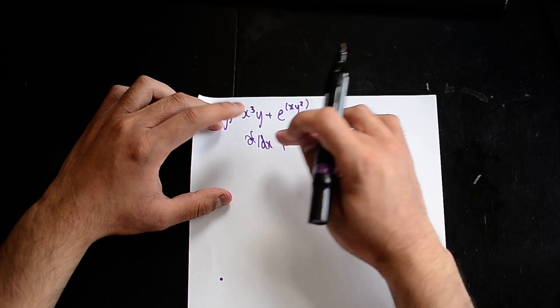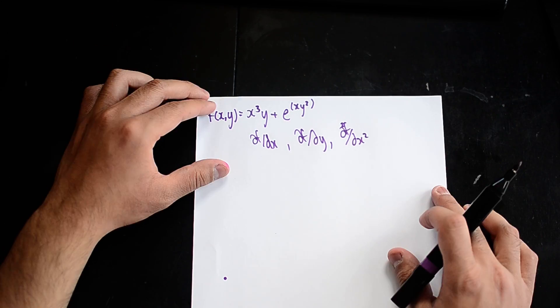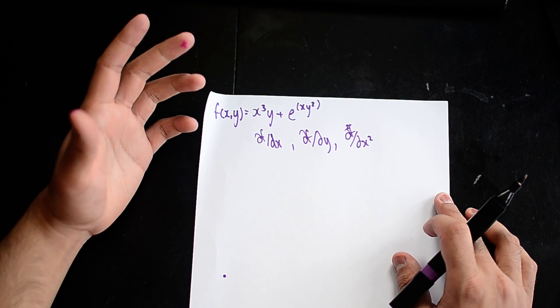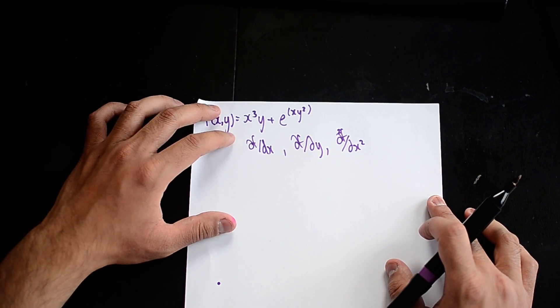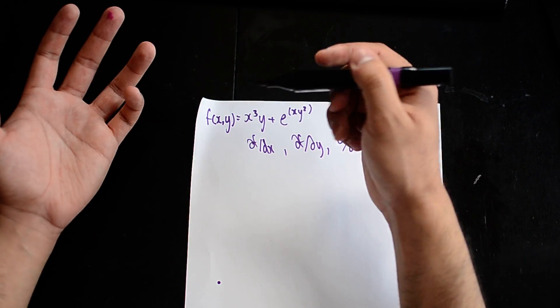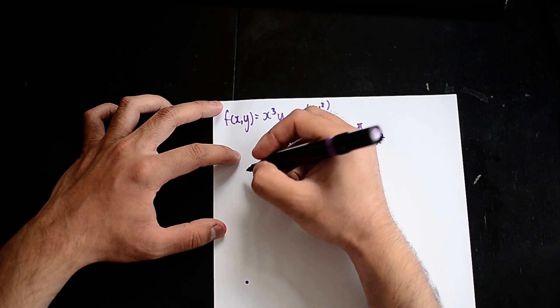When you're differentiating by df/dx you are holding the y terms constant, and if you're differentiating by df/dy you hold the x terms constant. What I mean by this is let me show you.